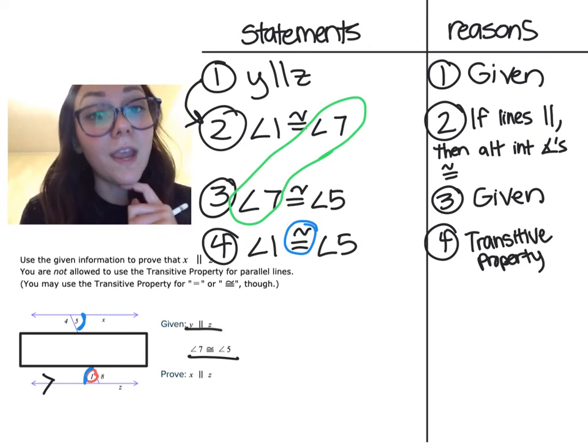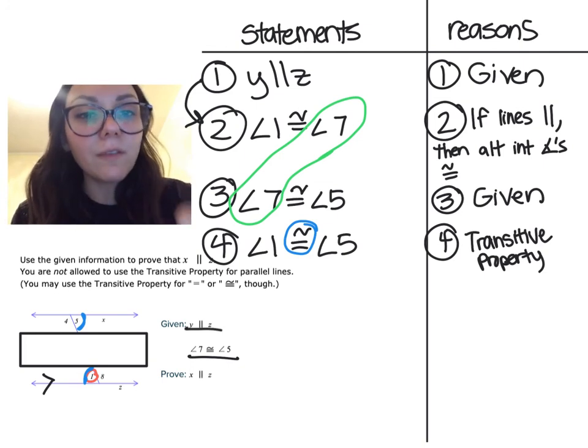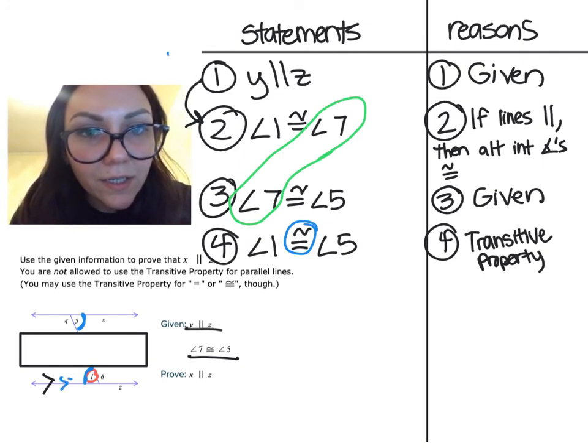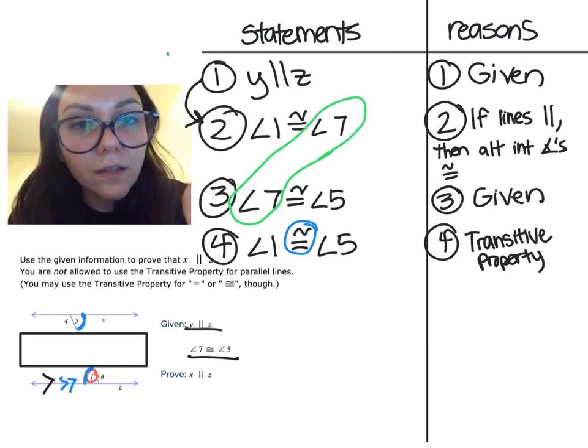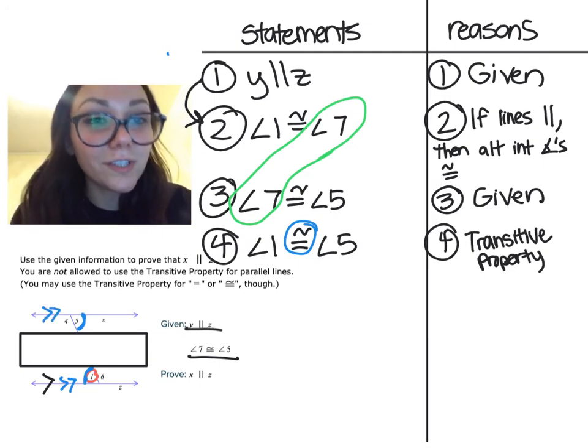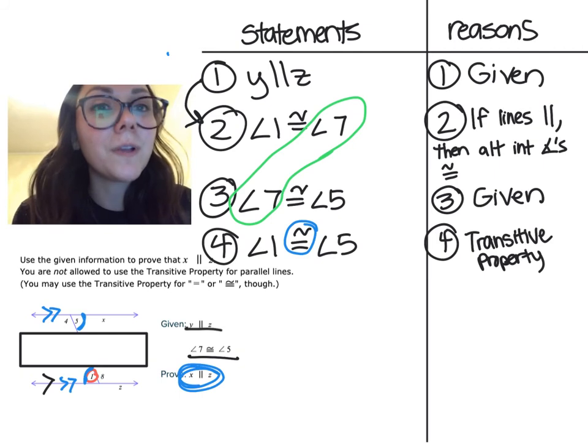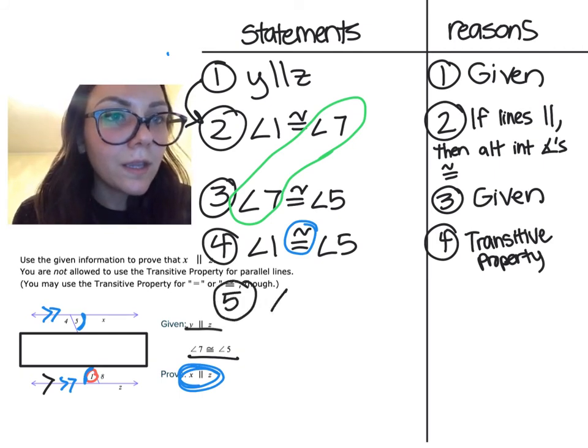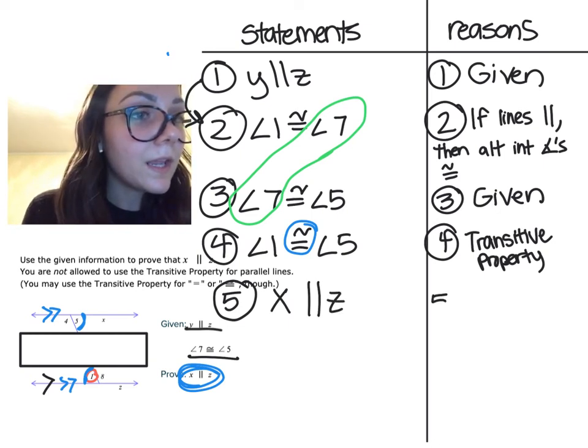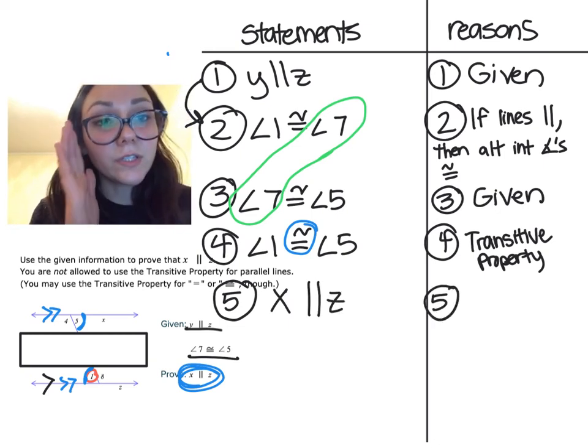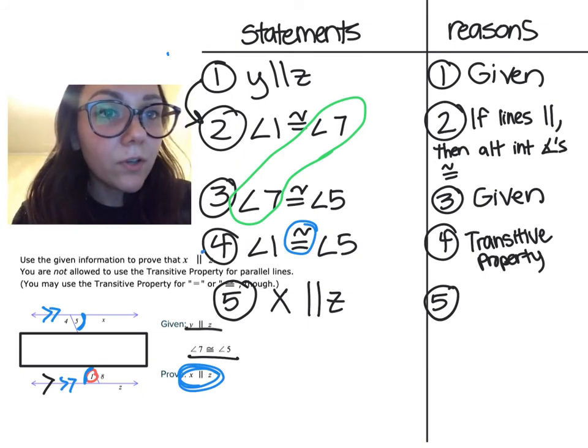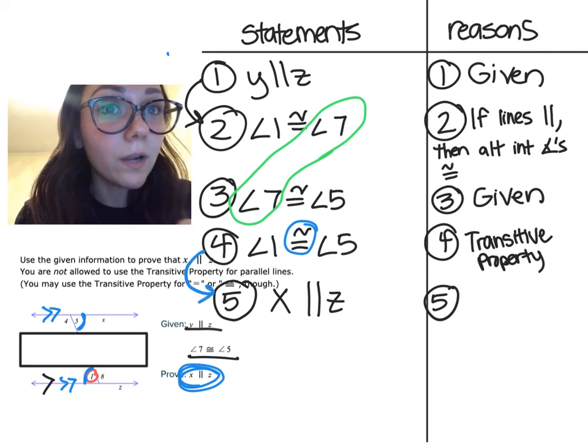So that would then prove that line Z is parallel to line X, which is what we want to prove. So that's what we're going to say. X is parallel to Z. And remember, the converse states, so follow the order of your proof. If congruent, then parallel.